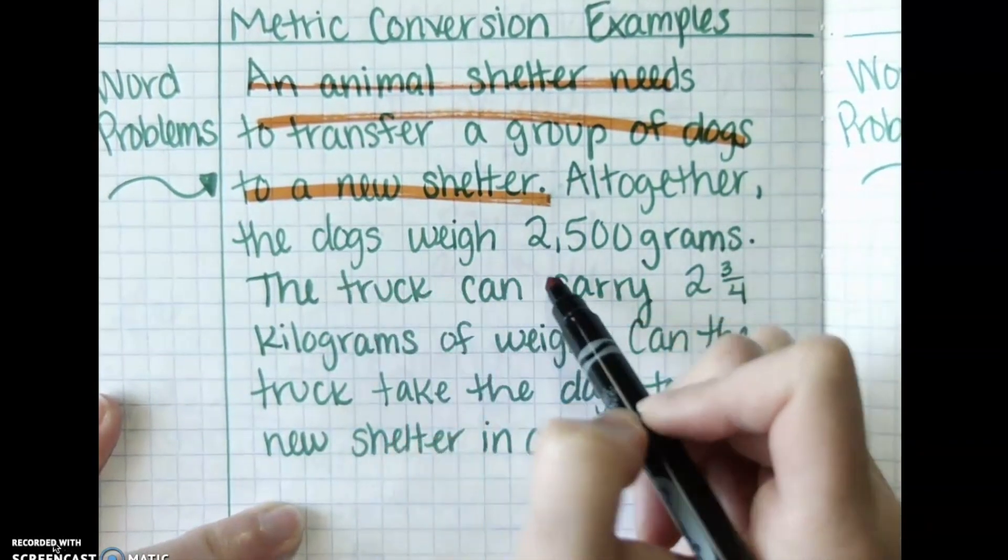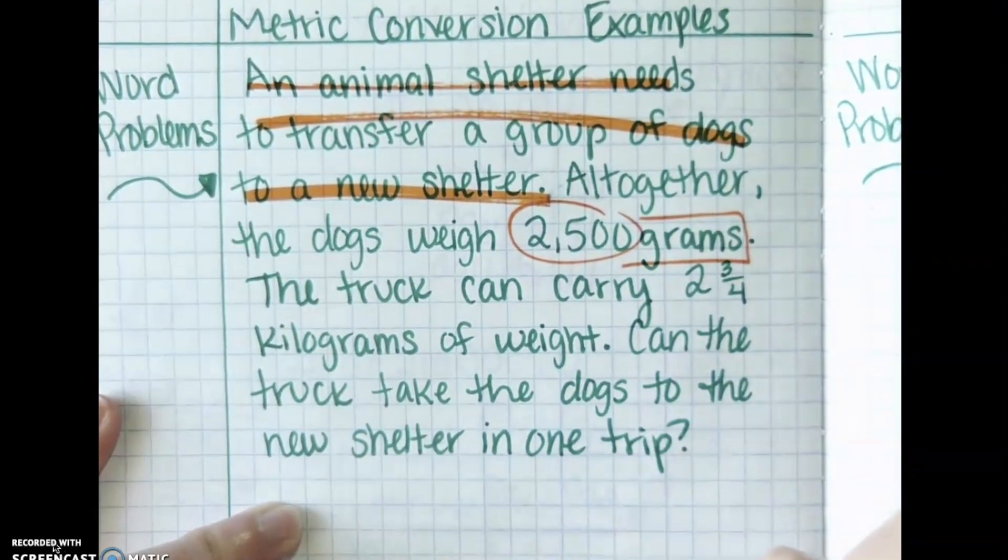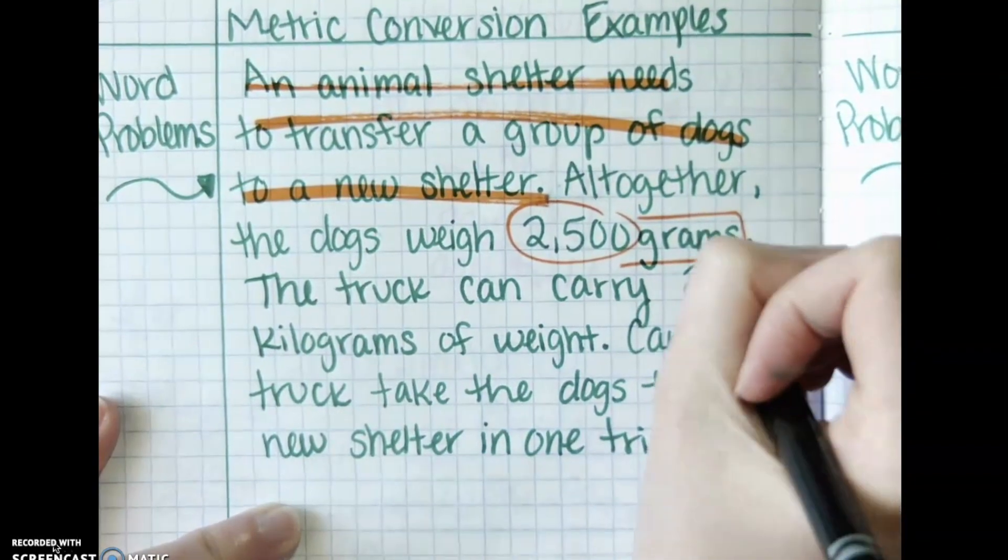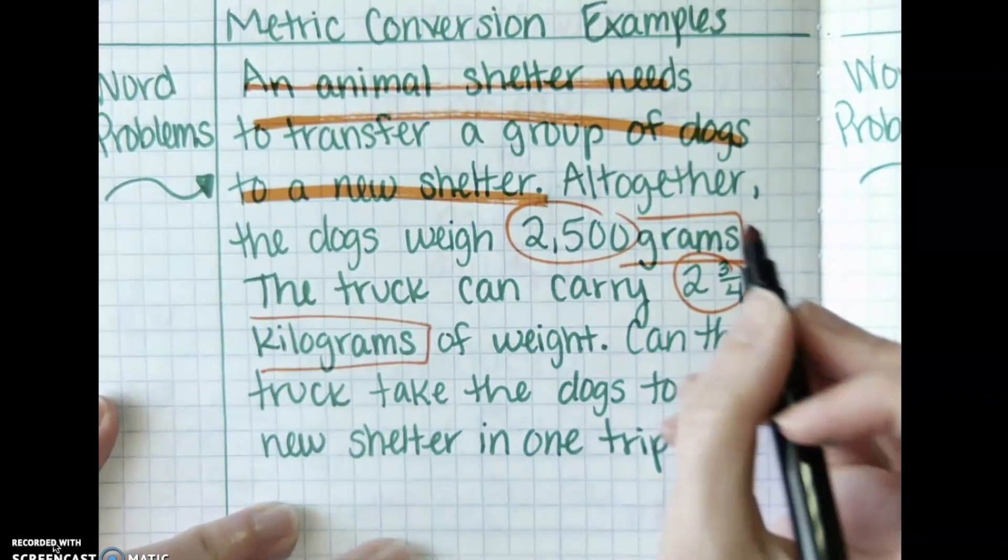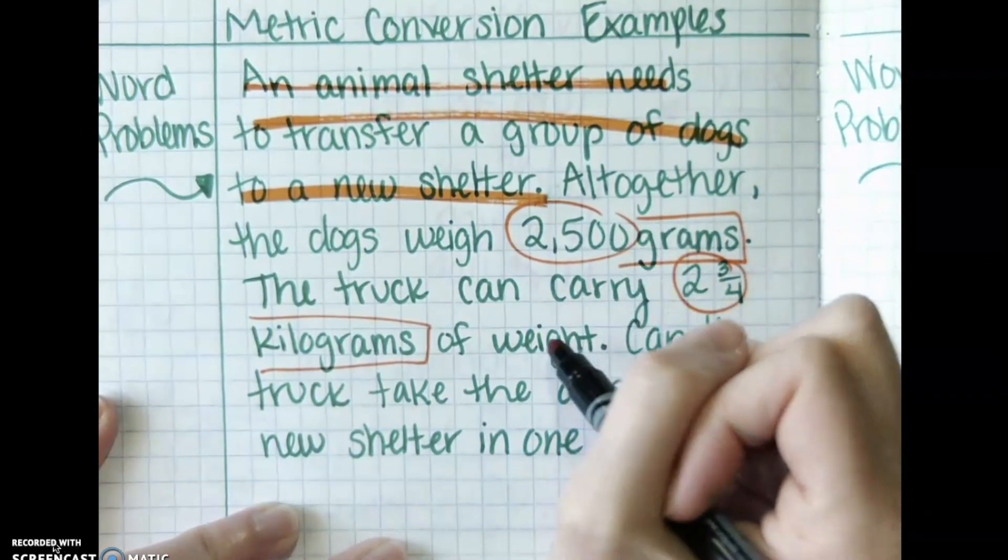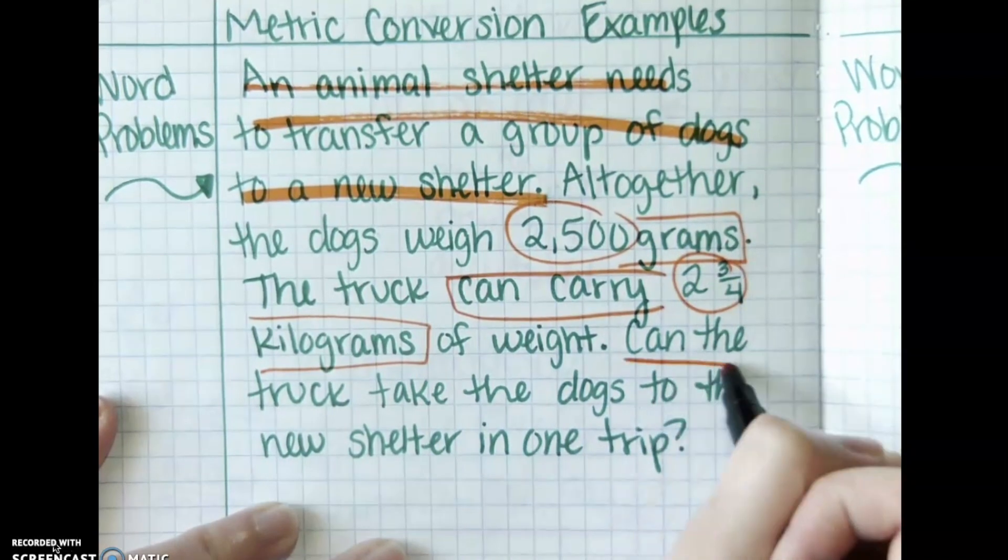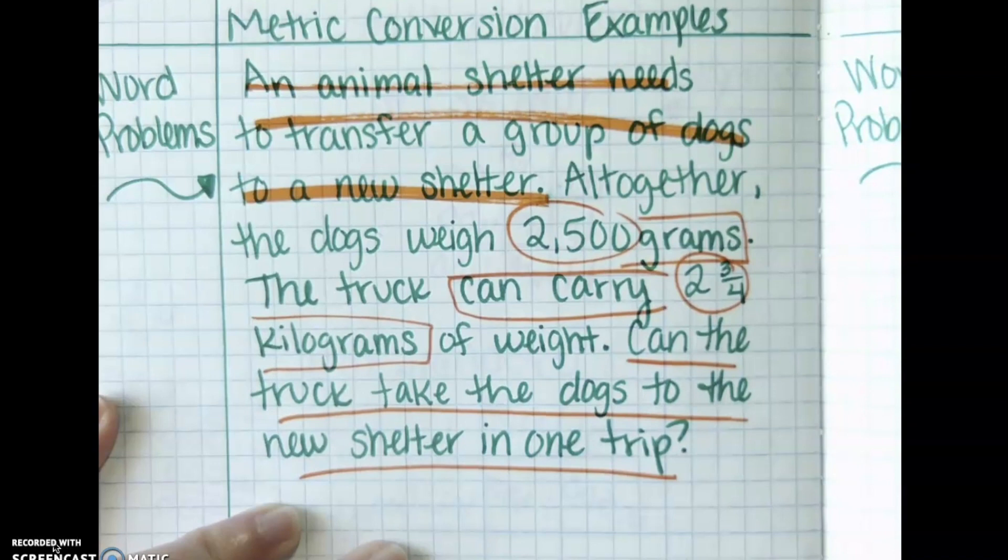All together the dogs weigh 2,500 grams. Okay, the truck can carry 2 and 3 quarters kilograms of weight. Okay, so it can carry that much weight. Can the truck take the dogs to the new shelter in one trip? Oh dear. Let's figure this out. We need to make sure these dogs get to their new shelter.